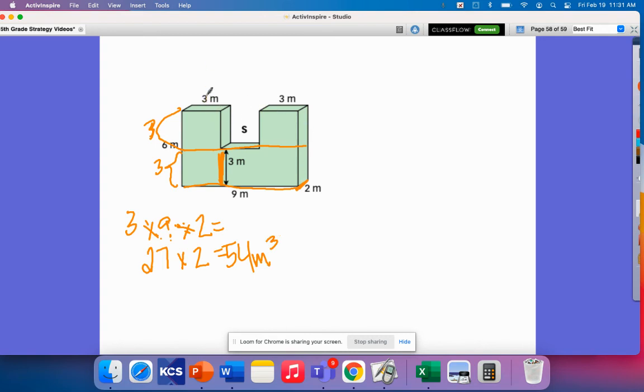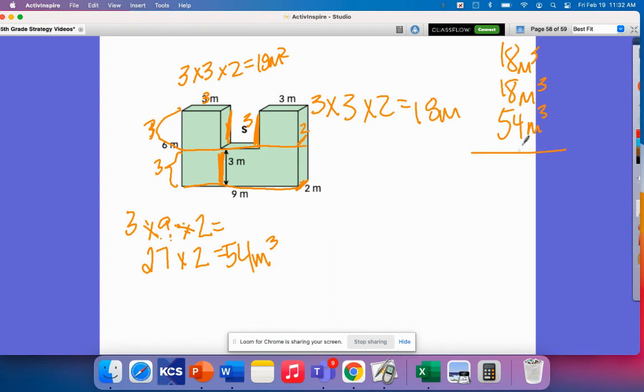Now I would just need to find these. So this is a three by, this has to be three by two. So a three by three by two, that's eighteen. This one would also be a three by three by two, which is the eighteen, so eighteen plus eighteen, fifty-four meters. That's ninety meters.